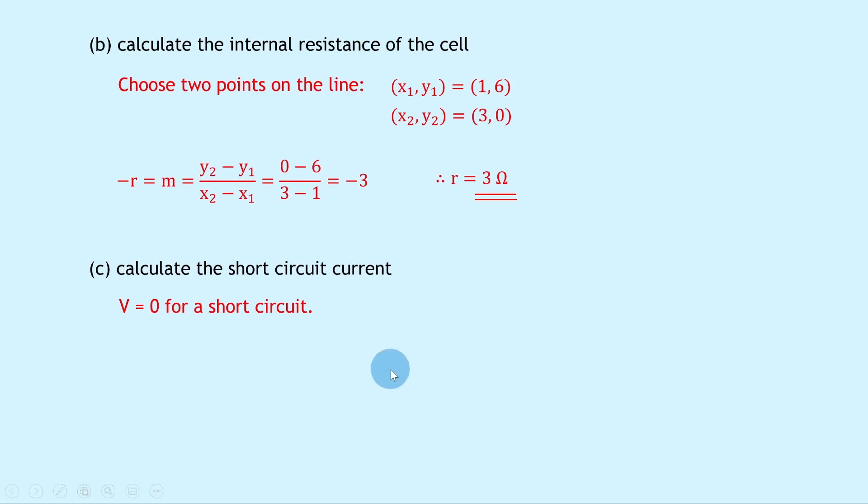So writing down, we know from the question we're trying to find the short circuit current. We know that EMF is nine volts from our estimate in part a. The terminal potential difference V we've said is zero volts, and the internal resistance r we've worked out in part b to be three ohms.